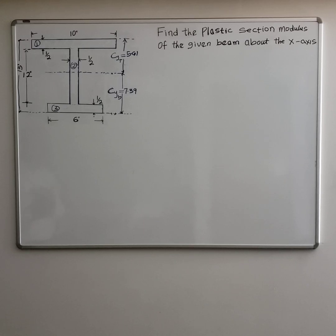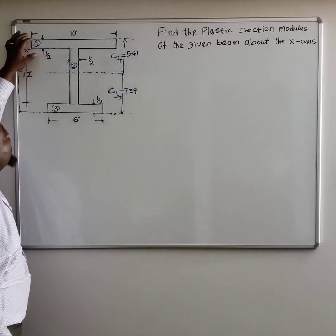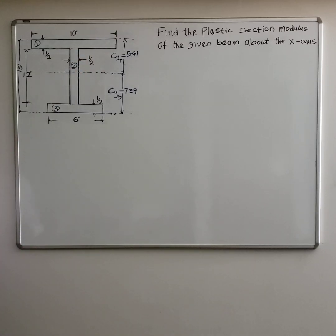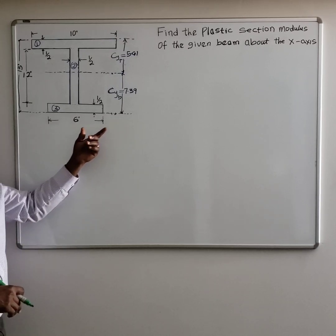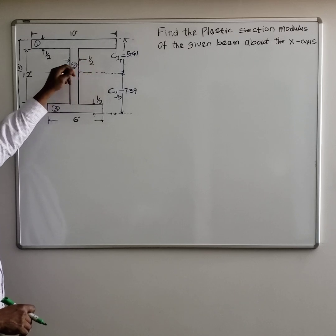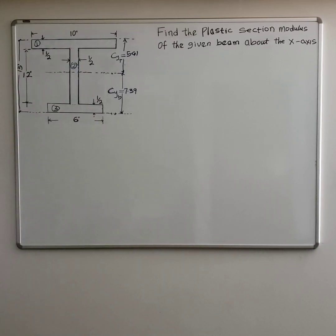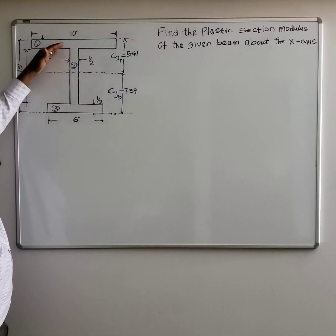Along that line, we want to solve for the plastic section modulus. What you need to realize about plastic section modulus is that the area about an axis must be equal on both sides. So if this is our axis, the area on the top must be equal to the area on the bottom. But in this particular beam, it is not so, because the centroid along the y-axis is higher, and the area of the bottom section is less than the area of the top section.